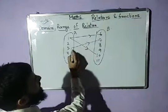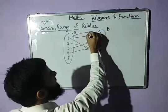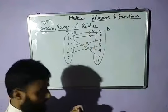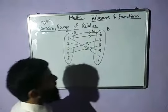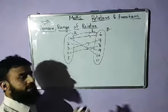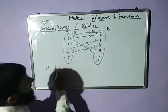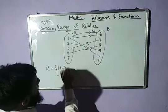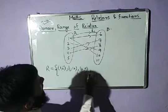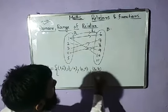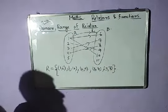Three is related to seven, two is related to seven, two is related to nine, four is related to eight. This is my relation R1 — it is a subset of A cross B. Written in roster form: (1,6), (1,10), (2,9), (3,7), (4,8). Now, what is your domain, what is your range, and what is co-domain?